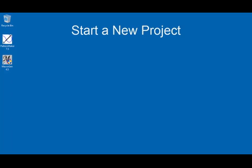So let's start a new project. I'm going to assume that you have successfully installed MacroGen. I just downloaded it here — I haven't even registered it. I'm just using the free version for this demonstration. You can download it from the PatternMaker CD or from the PatternMaker website. Let's go ahead and start the MacroGen program.